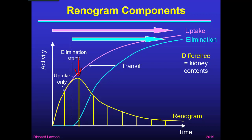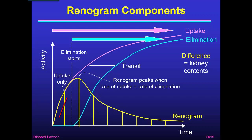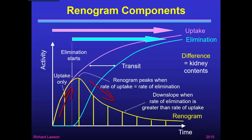Elimination starts a short while before the peak, because at the peak the rate of uptake and the rate of elimination must be equal. On the rising part of the curve before the peak, uptake is winning. On the downslope, elimination is winning. But at the peak, by definition, uptake and elimination must be equal. So the time when elimination starts must be a little while before that.